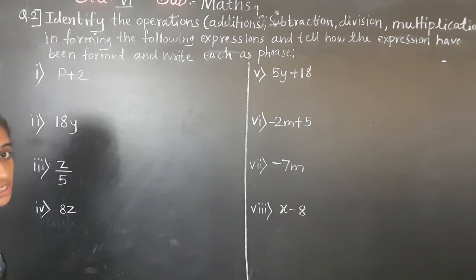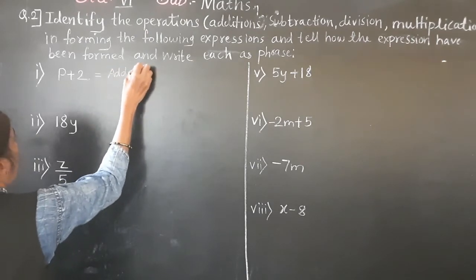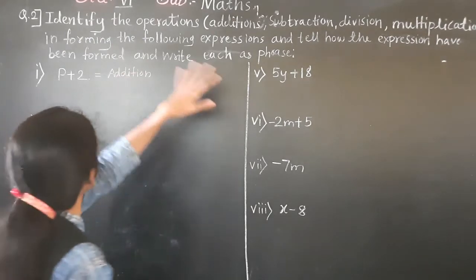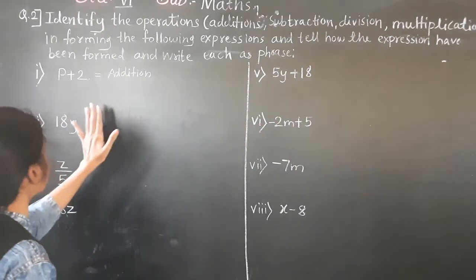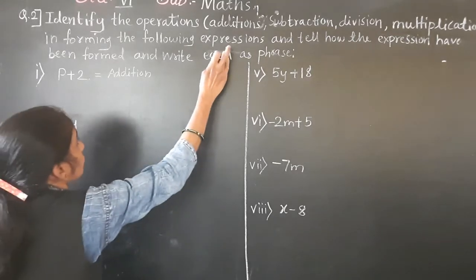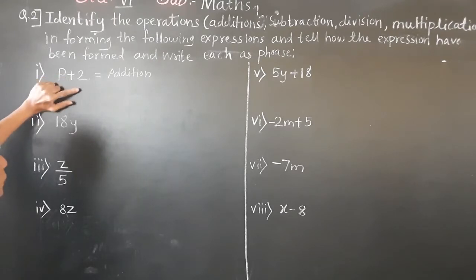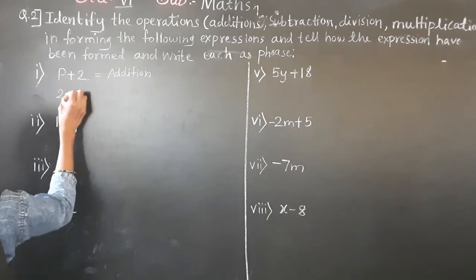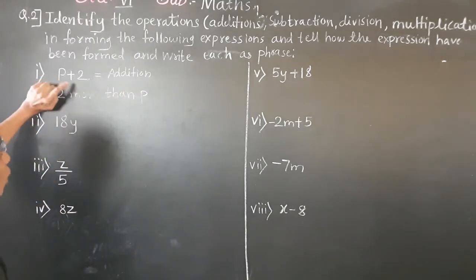p plus 2: the operation here is addition. Now we write it as a phrase. The words for addition include 'more than' and 'added to.' So we can write: '2 more than p,' or '2 is added to p.'